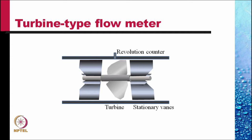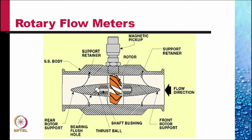Another type of flow meter is called a turbine type flow meter. In this, a rotary blade — a turbine — is located between two sets of stationary vanes. As the fluid flows, the turbine rotates, and the rate of revolution of the turbine is related to the flow rate of the fluid. A revolution counter is attached to measure it. The central mandrel which holds the turbine is kept in place by a couple of retainers, and a magnetic pickup picks up the rate at which the turbine is rotating.